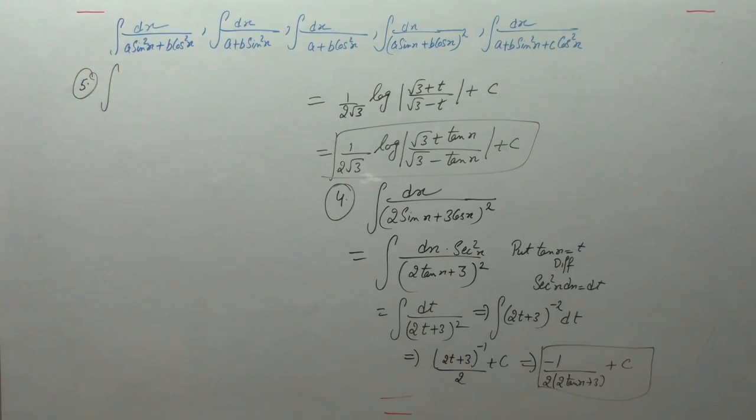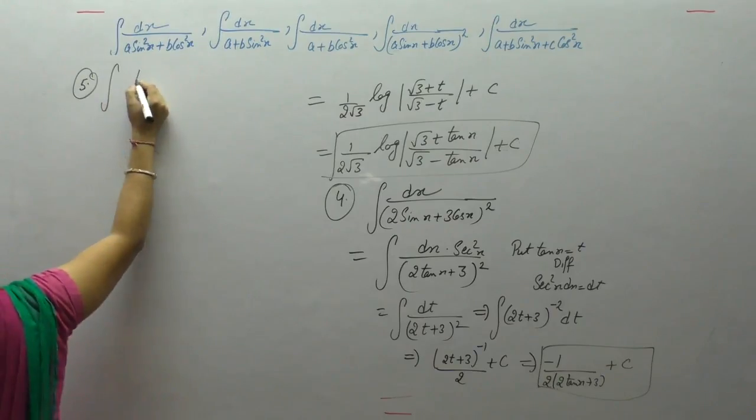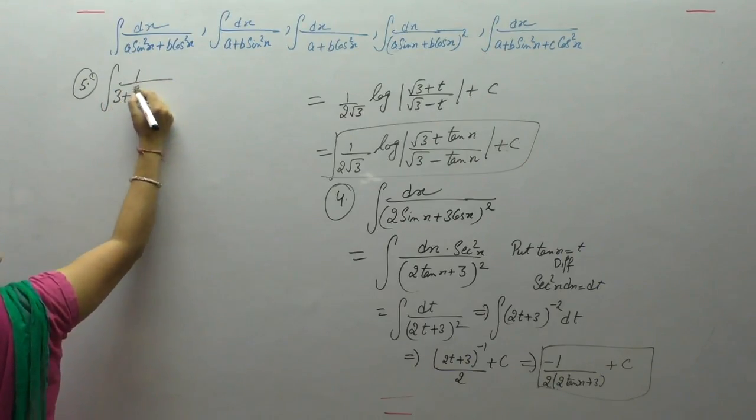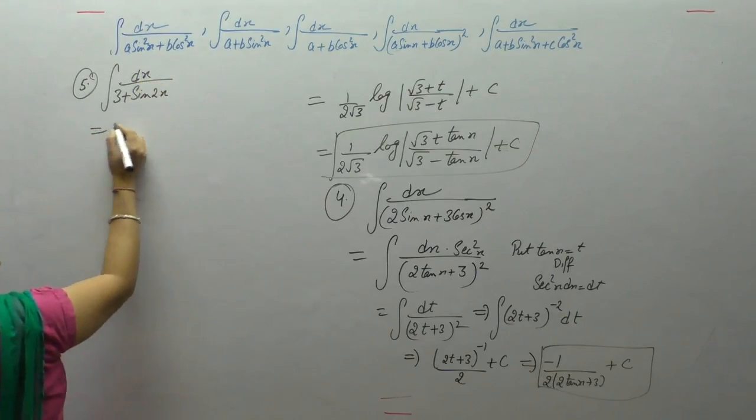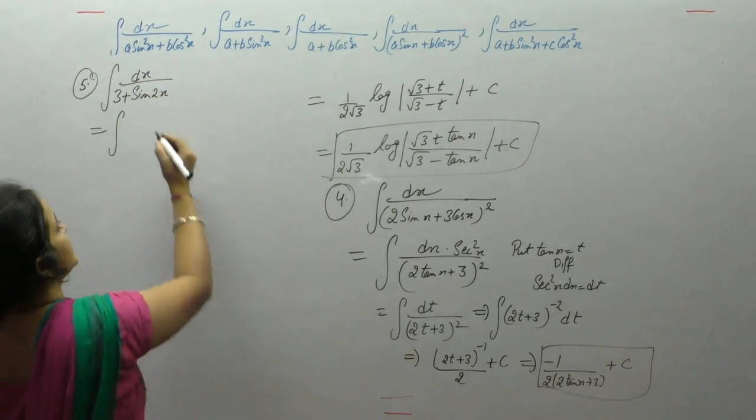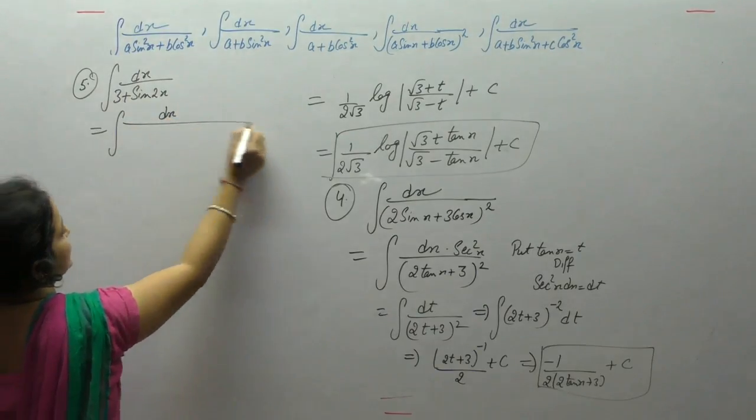Now the next one is integral of 1 upon 3 plus sin 2x. We have sin 2x here, apply the formula, sin 2x is equal to 2 sin x cos x.